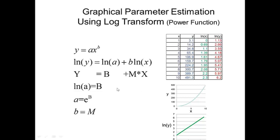We get this line, and then we can extract the parameters that we want by obtaining the intercept. The intercept would be this value right here, about 1.1. By comparing these two equations, the intercept is equal to the natural log of a. So if I take e to the capital B, then I get a, which is the coefficient out in front of the original equation.